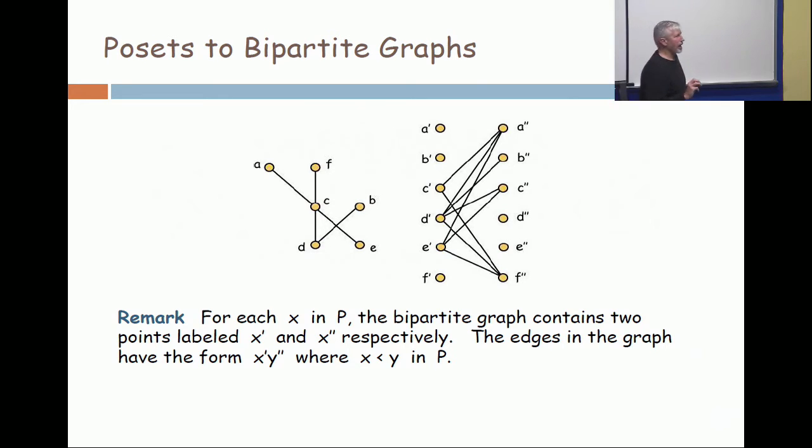I can ask a couple of questions. I give you a poset which has, I don't know, 23 points. And then I just ask you to describe in one sentence what the vertex set of the associated bipartite graph looks like. Then you're supposed to say there are 46 elements.